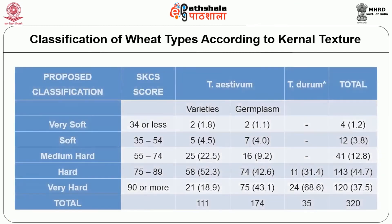Now we will have a look at the classification of wheat according to kernel structure. Wheat is classified into five types: very soft wheat, soft wheat, hard wheat, medium hard wheat and very hard wheat.